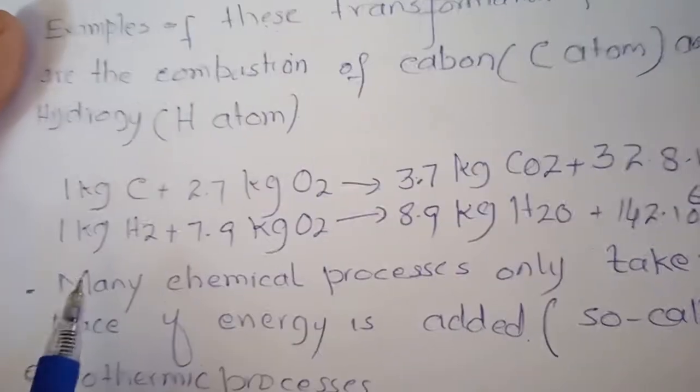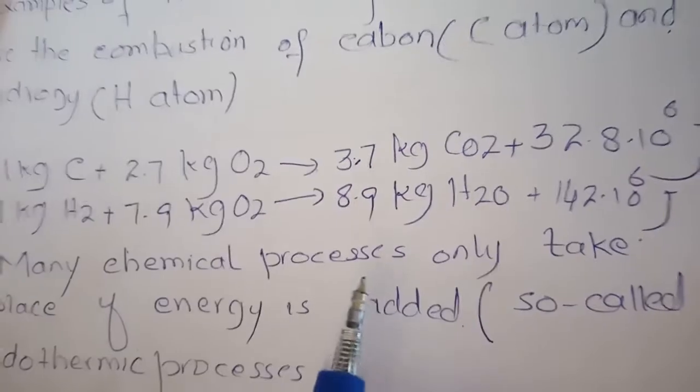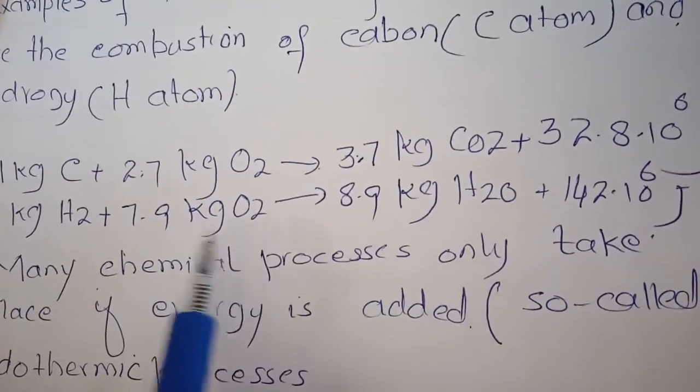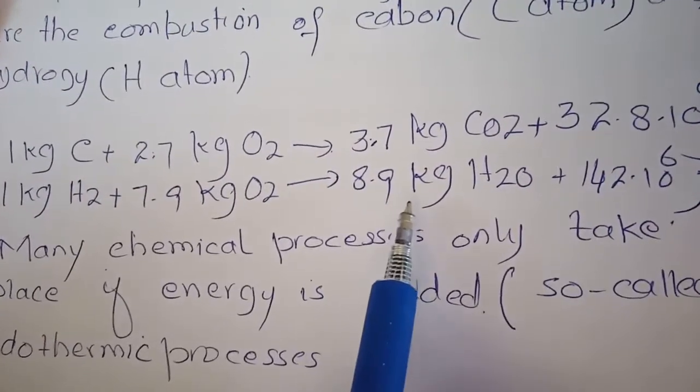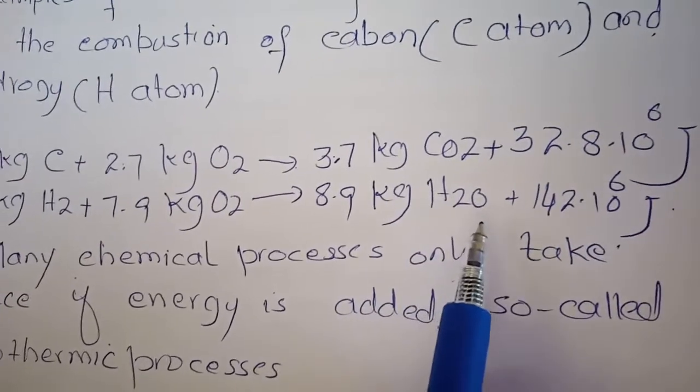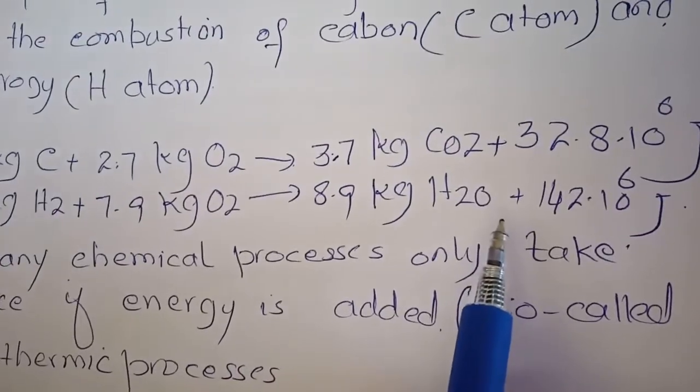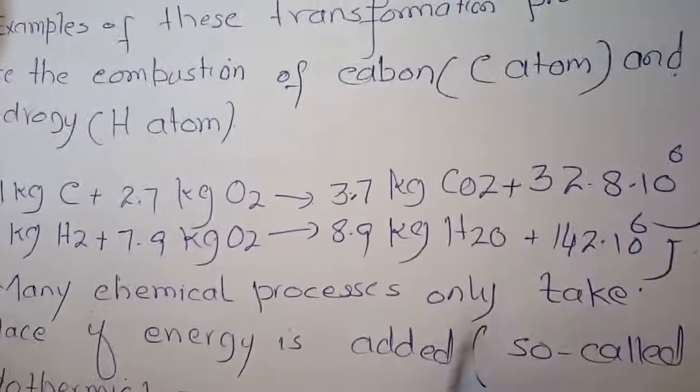Similarly, 1 kg of hydrogen plus 7.9 kg of oxygen, when combined, gives 8.9 kg of water plus 142 times 10 to the power 6 joules of energy is released.